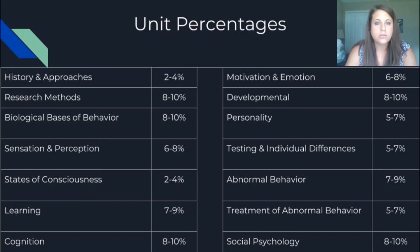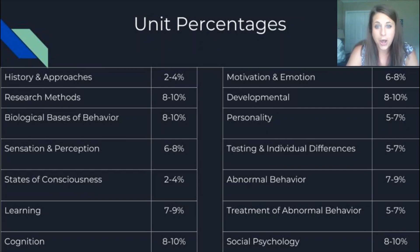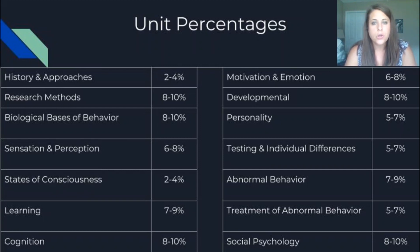If you're coming down to the wire and can only review a few units, I would review the heavy hitters — the 8–10% units. In reality, you should study all of the units, but use this as a guide to figure out the best way to study and prepare for the AP test.